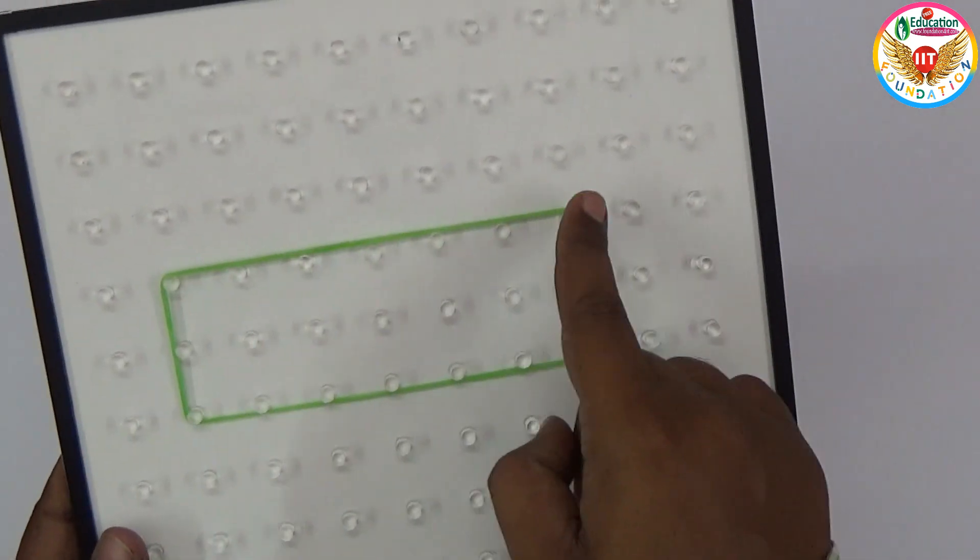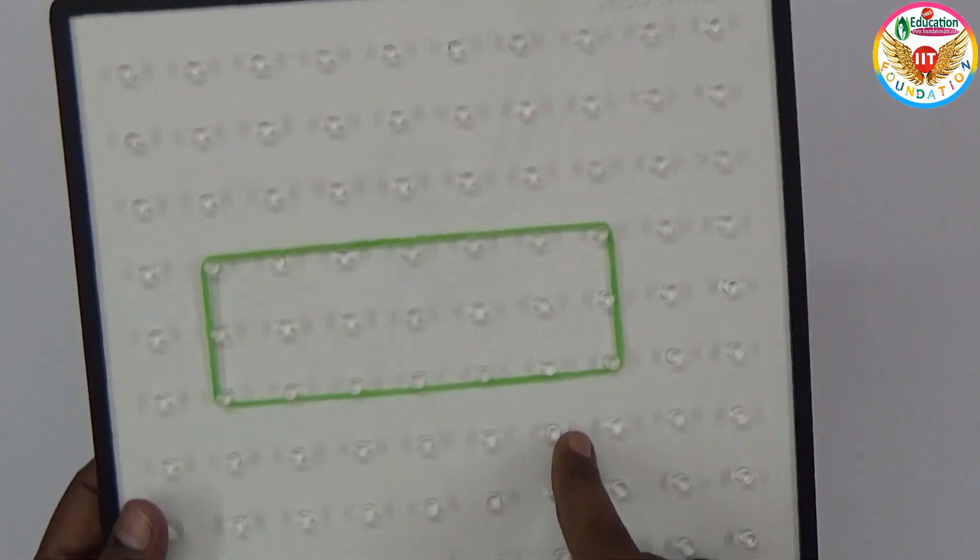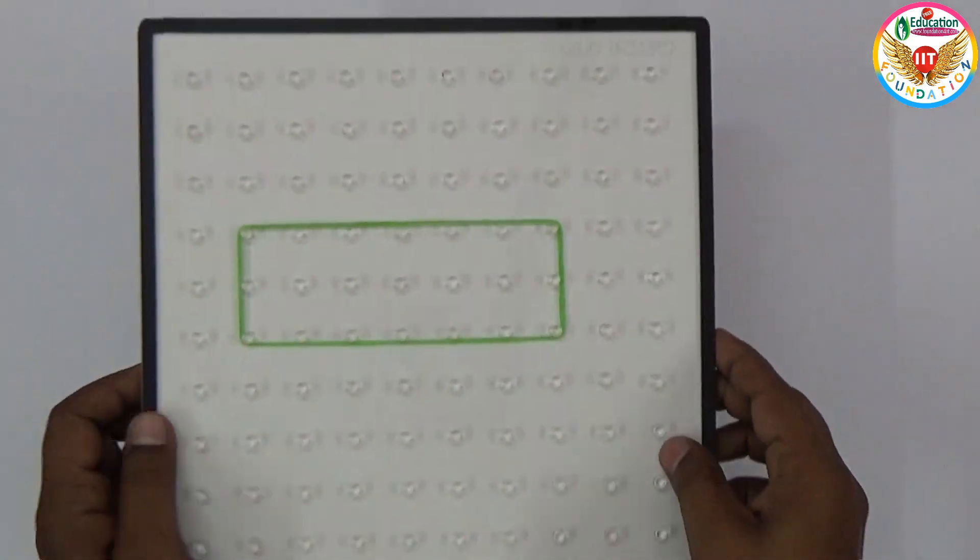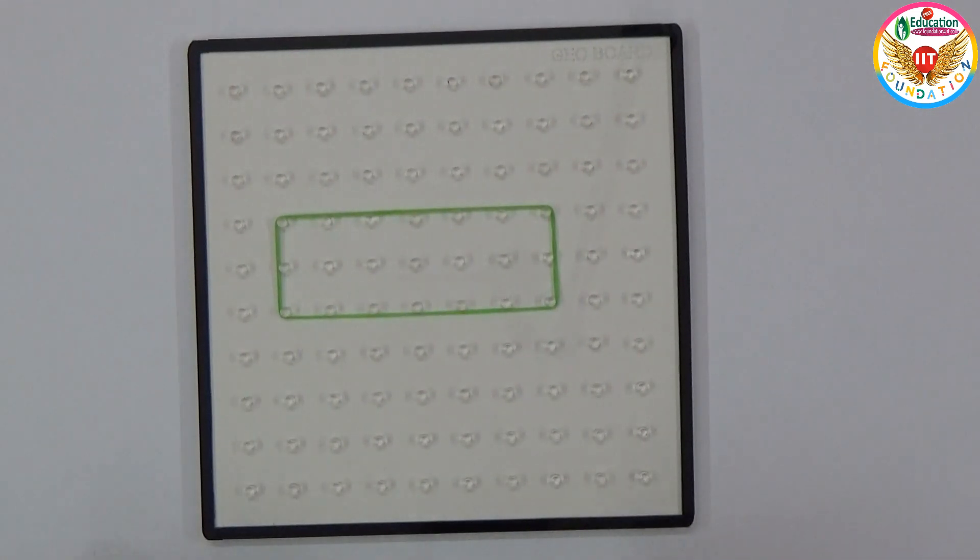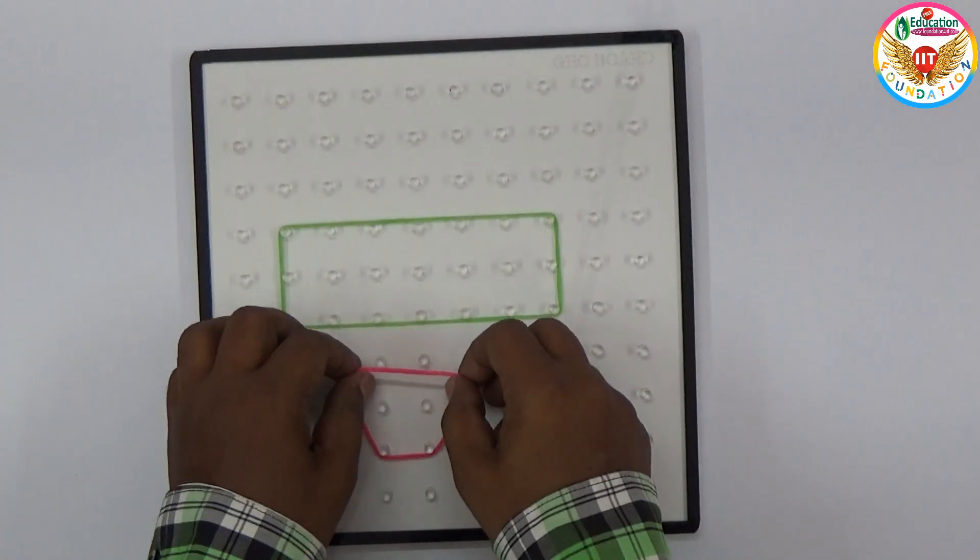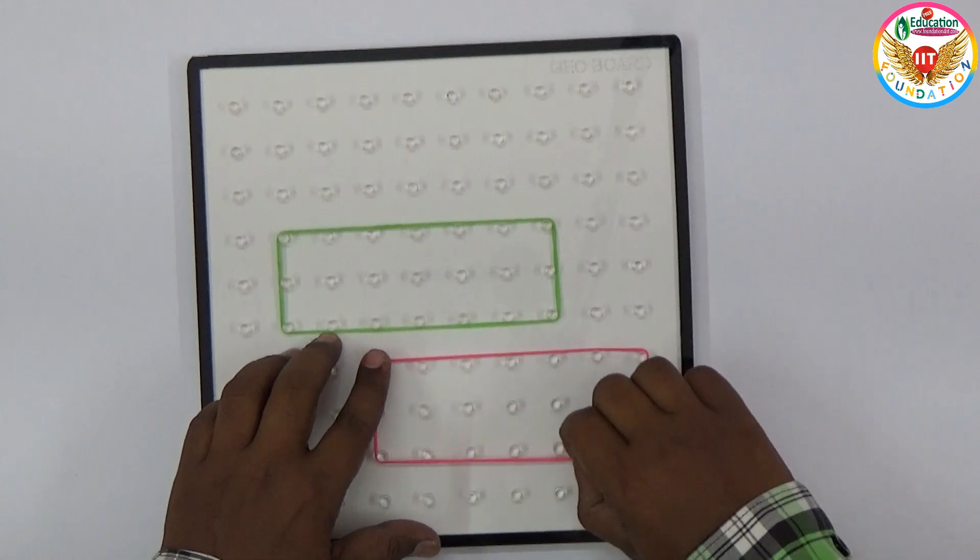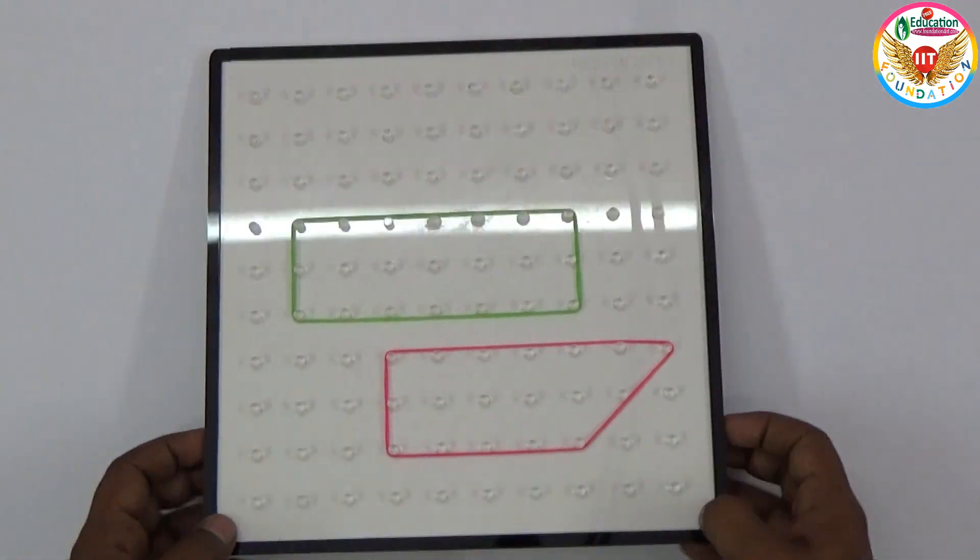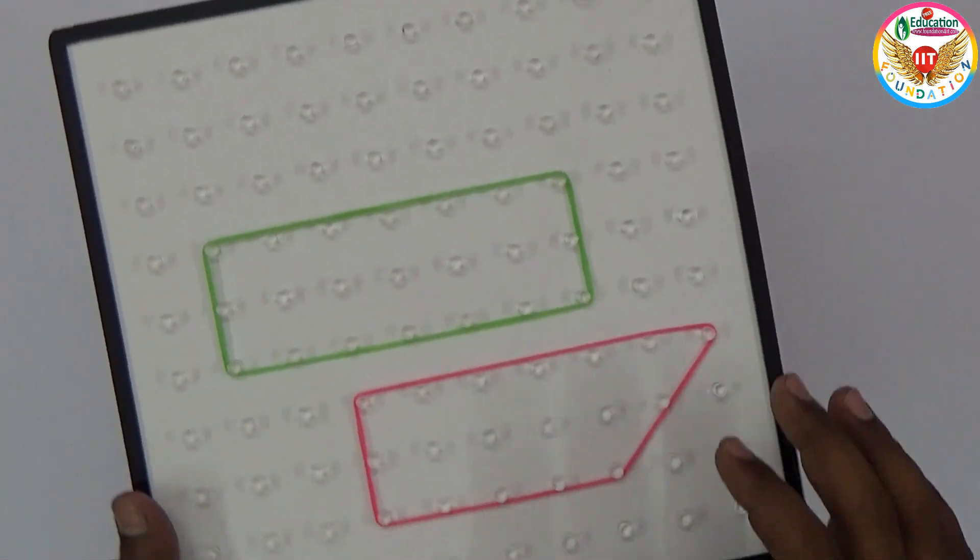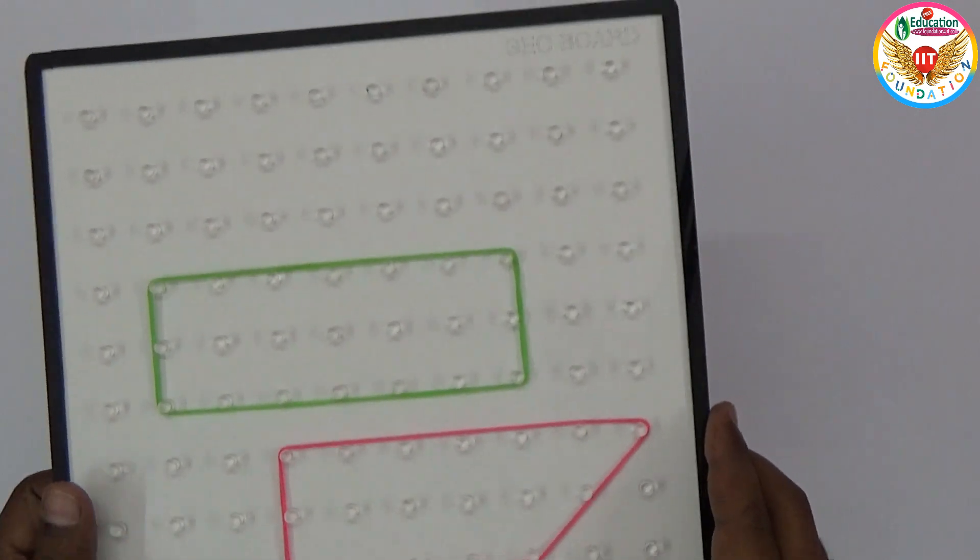If you join three and three rows, and the opposite sides are equal and parallel, you can demonstrate a rectangle. You can explain all geometrical shapes: square, rectangle, parallelogram, trapezium, and all the geometrical shapes using this geo board.